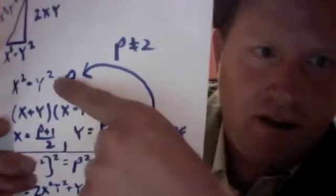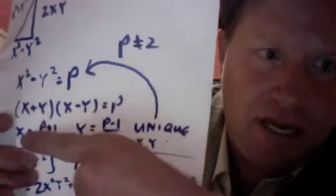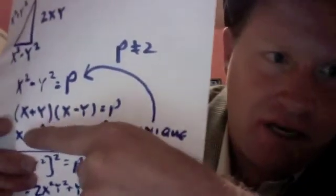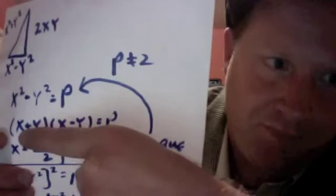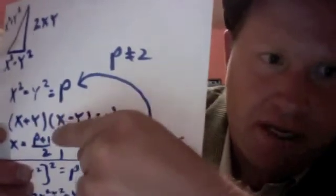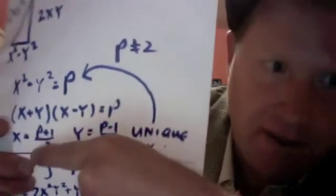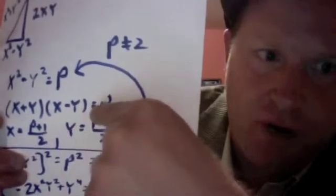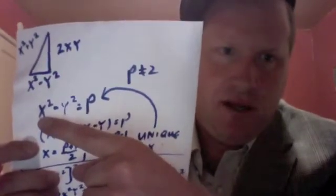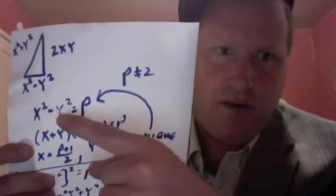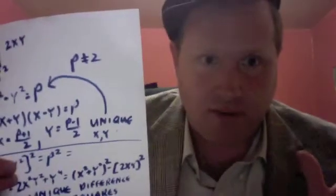Establishing for every odd value of p a unique value of x and y, because again if you solve it as a system of equations, x plus y equals p and x minus y equals 1, you will get x equals p plus 1 over 2 and y equals p minus 1 over 2. And that'll be unique for every odd value of p. So that proves that every odd p is equal to x squared minus y squared, some unique difference of squares.